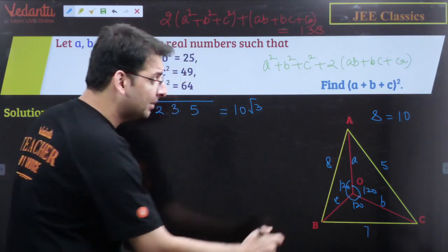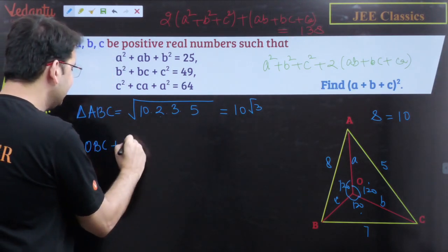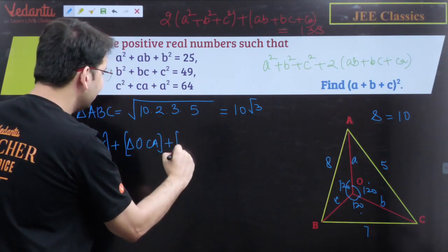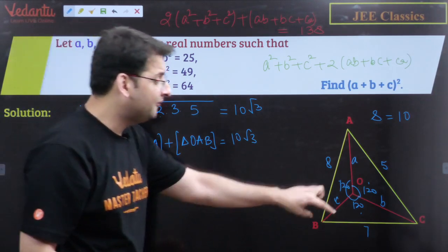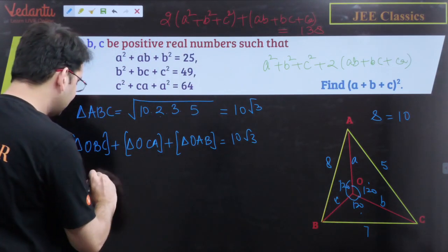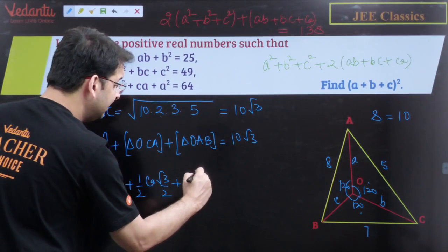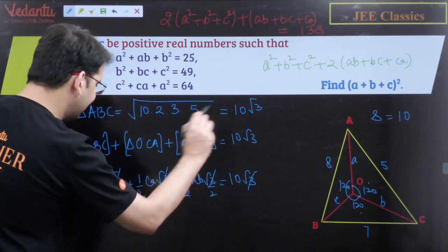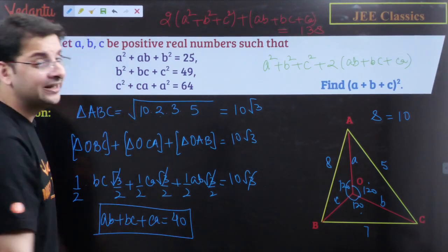The area of triangle ABC also equals the sum of the three smaller triangles OBC, OCA, and OAB. Each has an included angle of 120° at O, so: Area = ½·bc·sin120° + ½·ca·sin120° + ½·ab·sin120° = (√3/4)(bc+ca+ab) = 10√3. Cancelling √3, we get (bc+ca+ab)/4 = 10, so AB+BC+CA = 40.